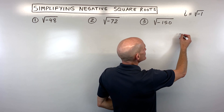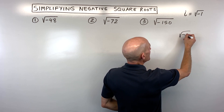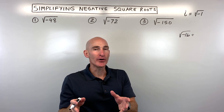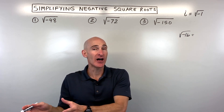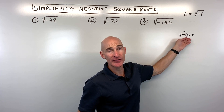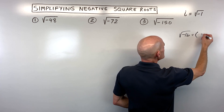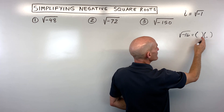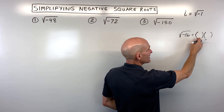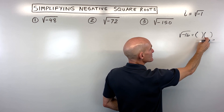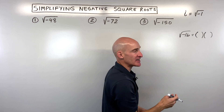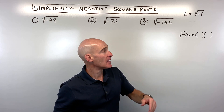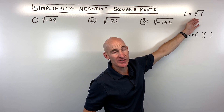Think about it for a minute. Say if you had the square root of negative 16. When you take the square root, it's really asking what number times itself equals the quantity underneath the radical. If you take four times itself, that's positive 16. Or if you take negative four times itself, that's also positive 16. So how can you take the square root of a negative number? That's where the i comes in.